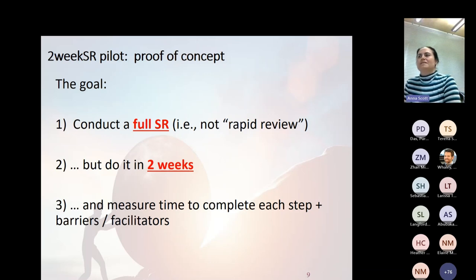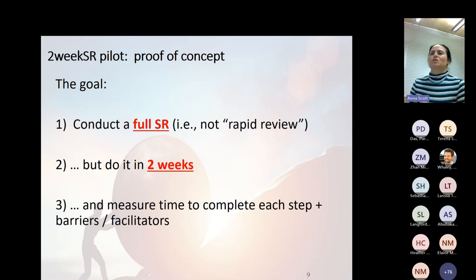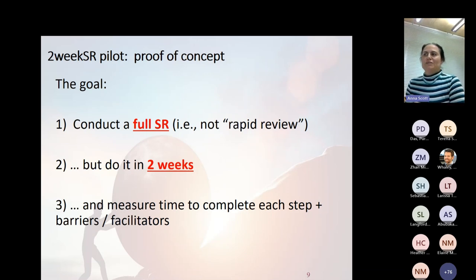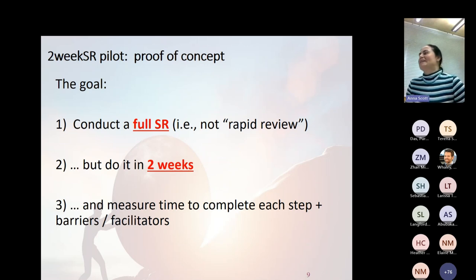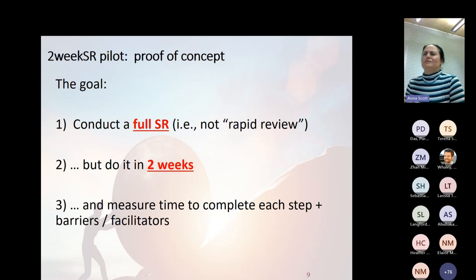One day in October 2018, I said to Paul: let's see if we can actually try this — let's see if we can do a systematic review in two weeks. That's how this crazy idea came about. We set out to do a full systematic review without taking any shortcuts, but wanted to do it in two weeks, which given the timelines we were all familiar with was crazy, and in retrospect still is.